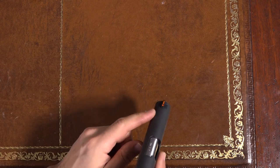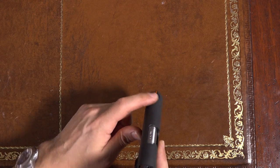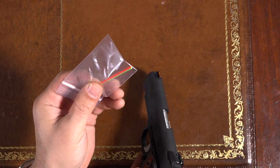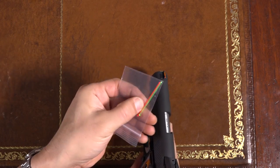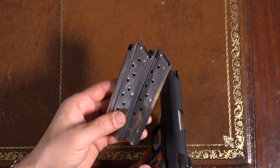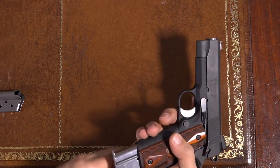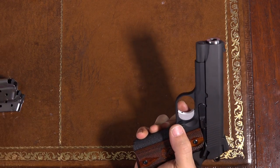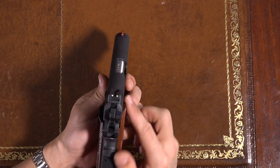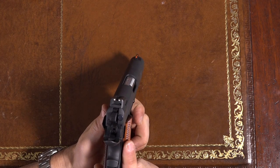It also comes, as you can see, this had the orange fiber optic front sight installed. It comes with a red fiber optic rod and a green fiber optic rod in case you want to change it. I thought that was a nice touch. Comes with two nine round magazines. They are flush fit magazines.